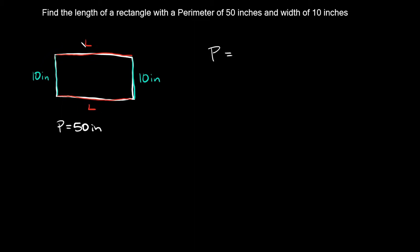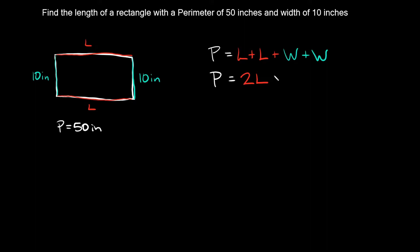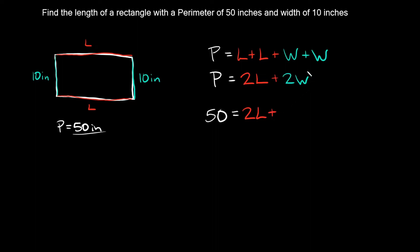We can write it as length plus length plus width plus width. We can also rewrite this: the perimeter is equal to L plus L, which I can rewrite as 2L, and then plus W plus W, which I can rewrite as 2W. So let's fill in some information we know. The perimeter is equal to 50 inches, so 50 is equal to 2L plus 2W.